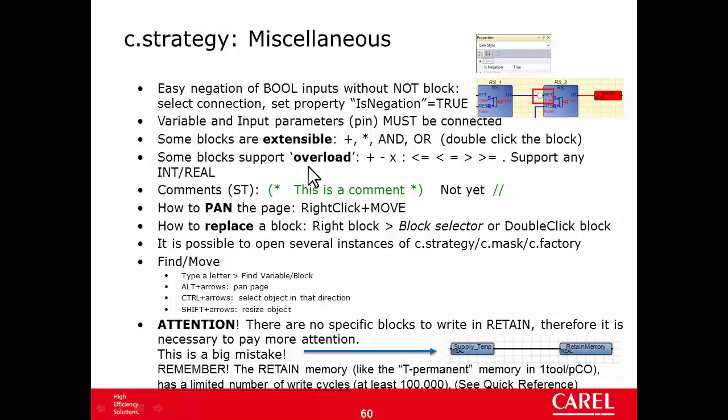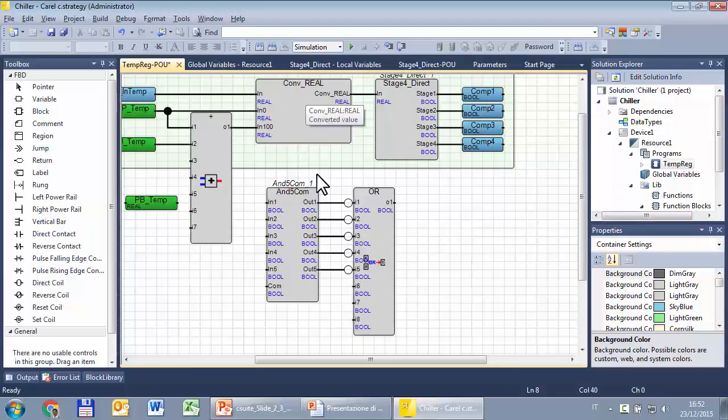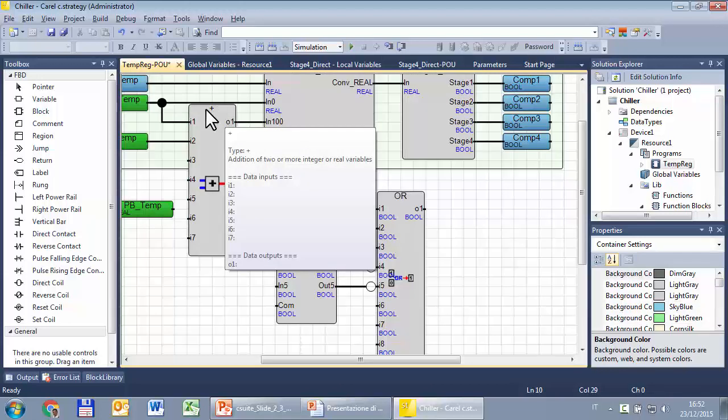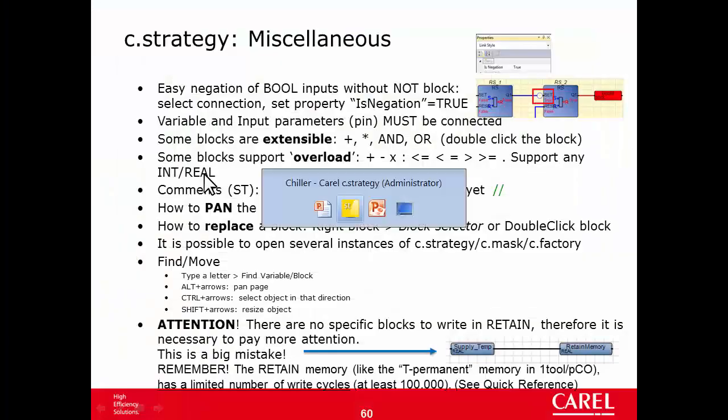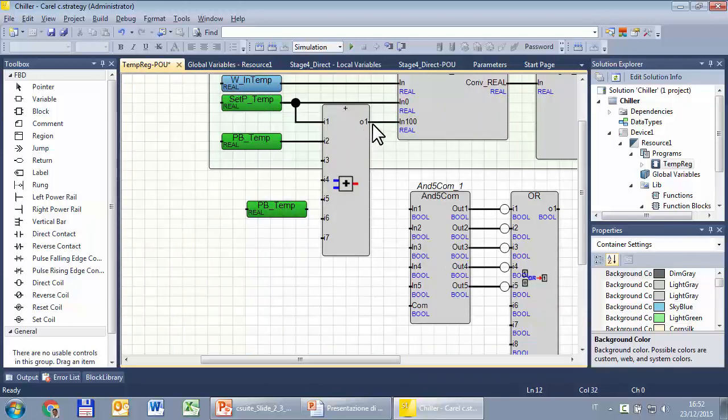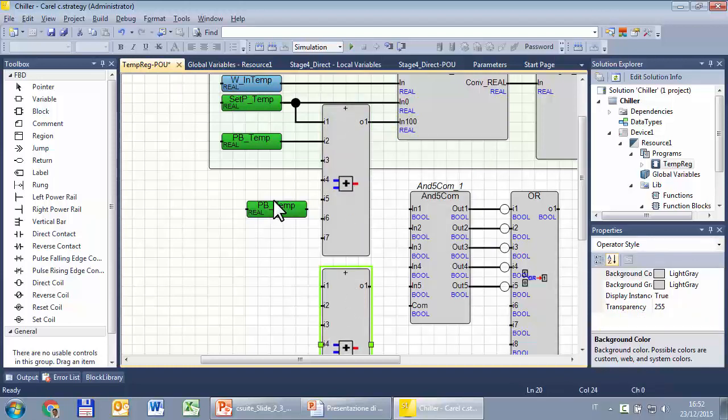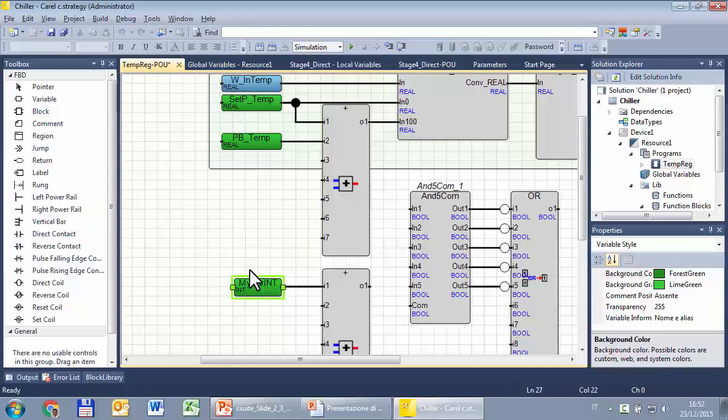Next, some blocks support the overload. At the moment the arithmetic blocks, functions and the comparator functions. You notice that some blocks are able to read and write to a specific data type. Others, like the ADD, support the overload. That is, they are able to read and write into any of integer and real value. In this example, we have the ADD that reads real values, so it will return a real value. But we can use the same block with variables. For example, this is an integer variable. So, integer, integer and the output will be integer.